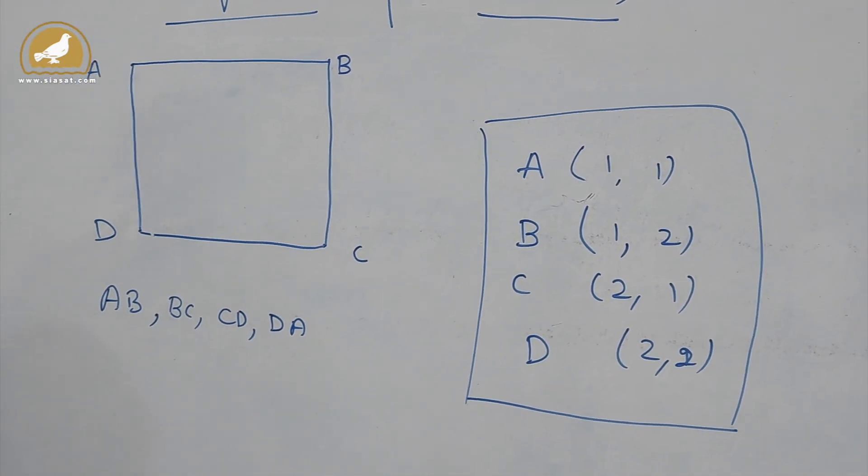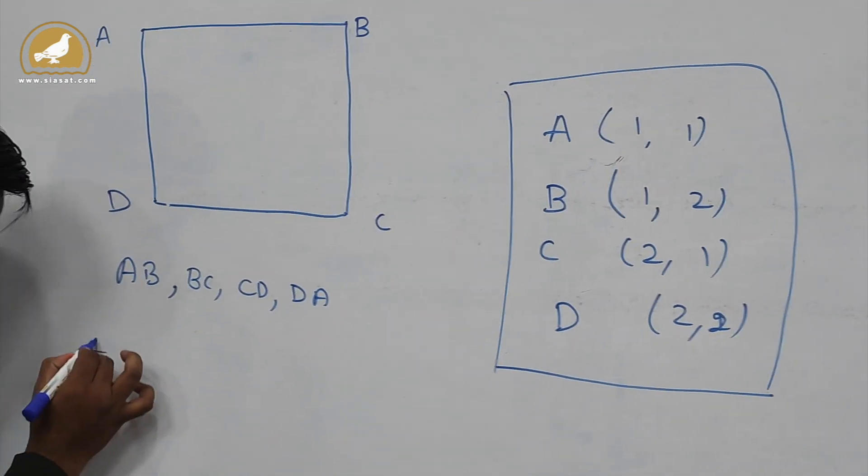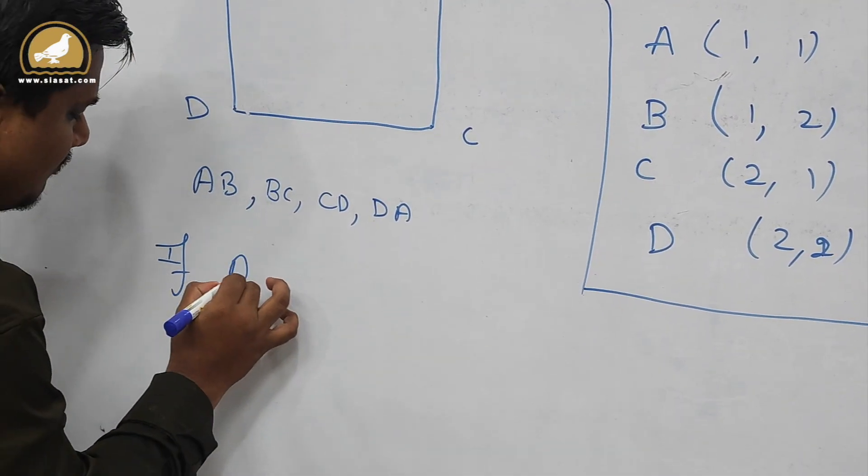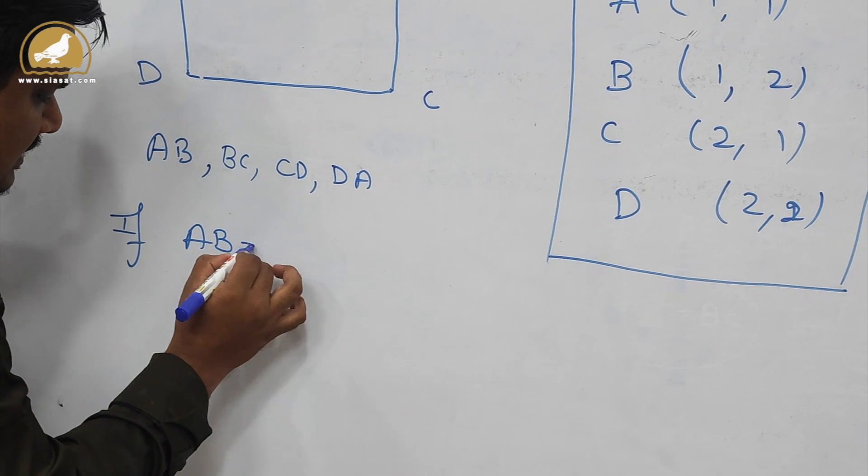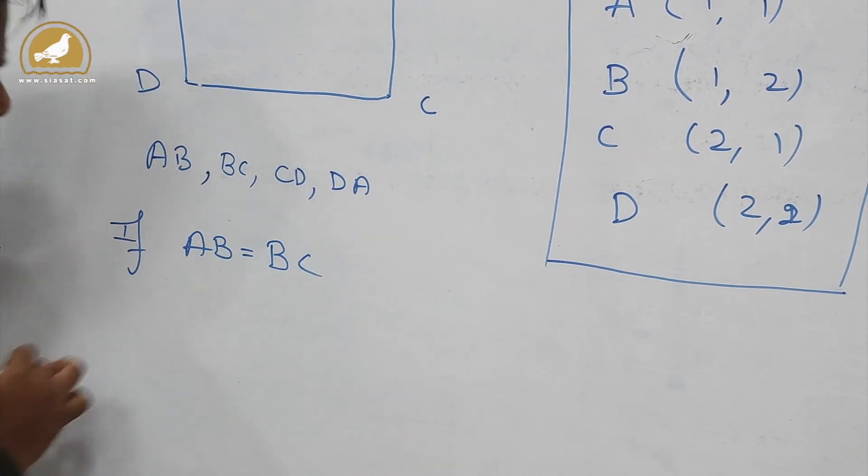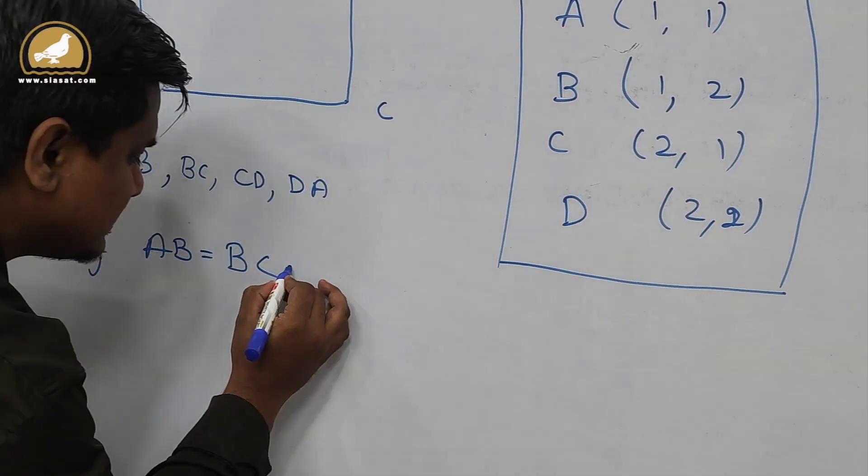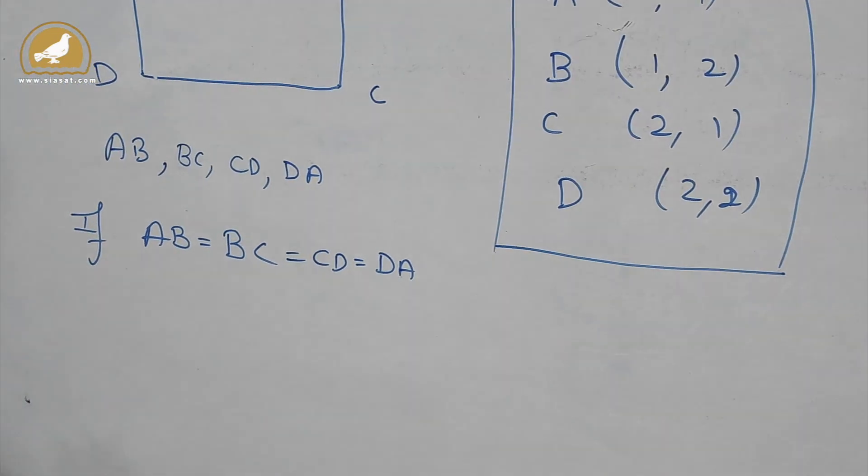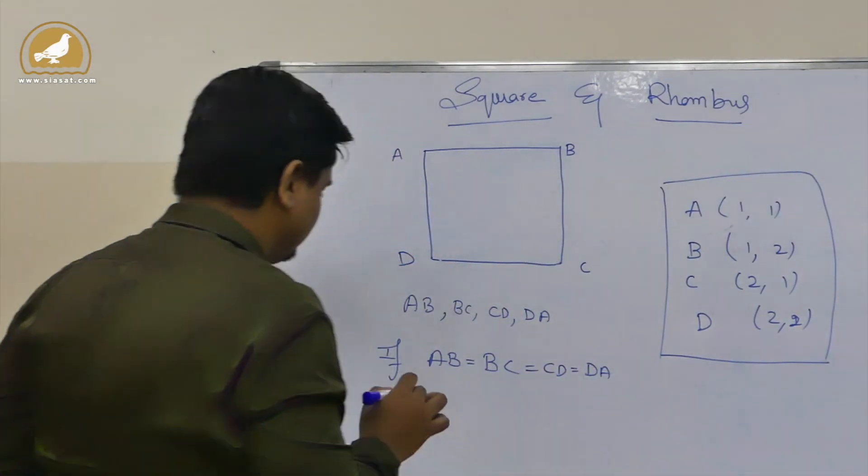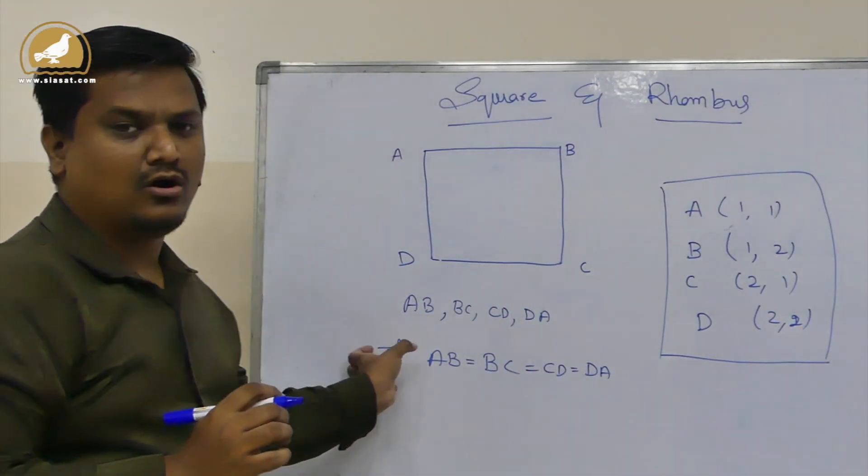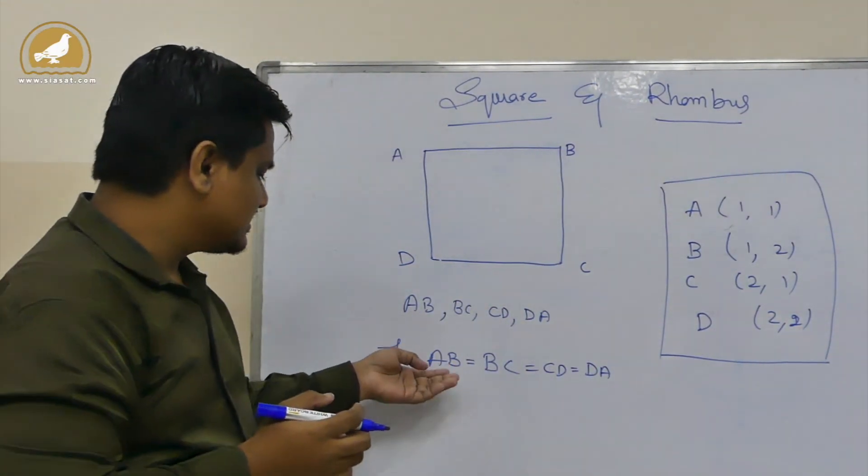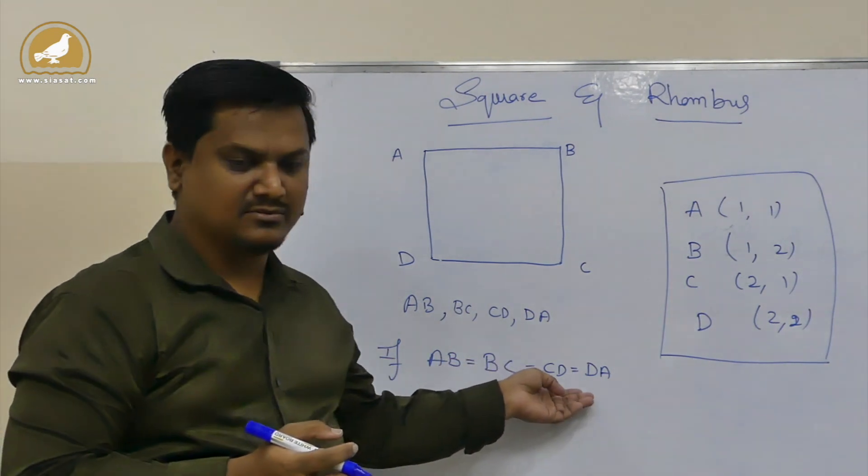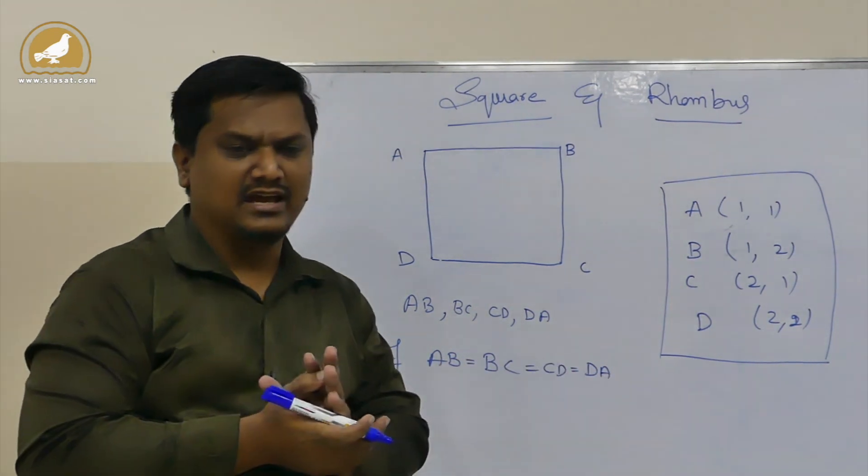If AB is equal to BC is equal to CD is equal to DA, if I get all the sides equal—that means the distance between A and B, distance between B and C, distance between C and D, distance between D and A—if all are equal,